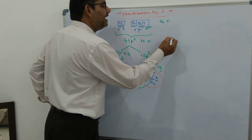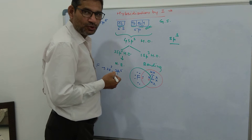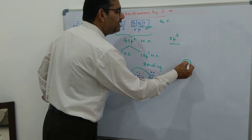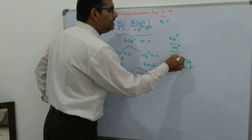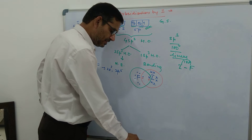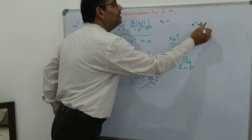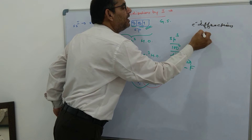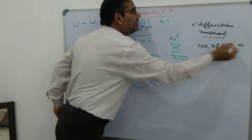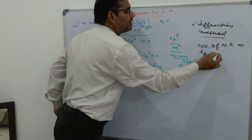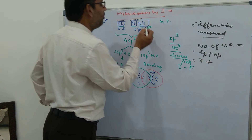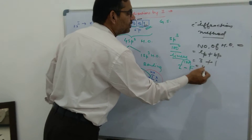The sp³ hybridization shown by iodine gives a bond angle between iodine and F. According to the electron diffraction method, the number of hybridized orbitals equals lone pairs plus bond pairs. Here, lone pairs are 1, 2, and 3, and bond pair is only 1, so 3 + 1 = 4 — that is why sp³ hybridization is assigned.